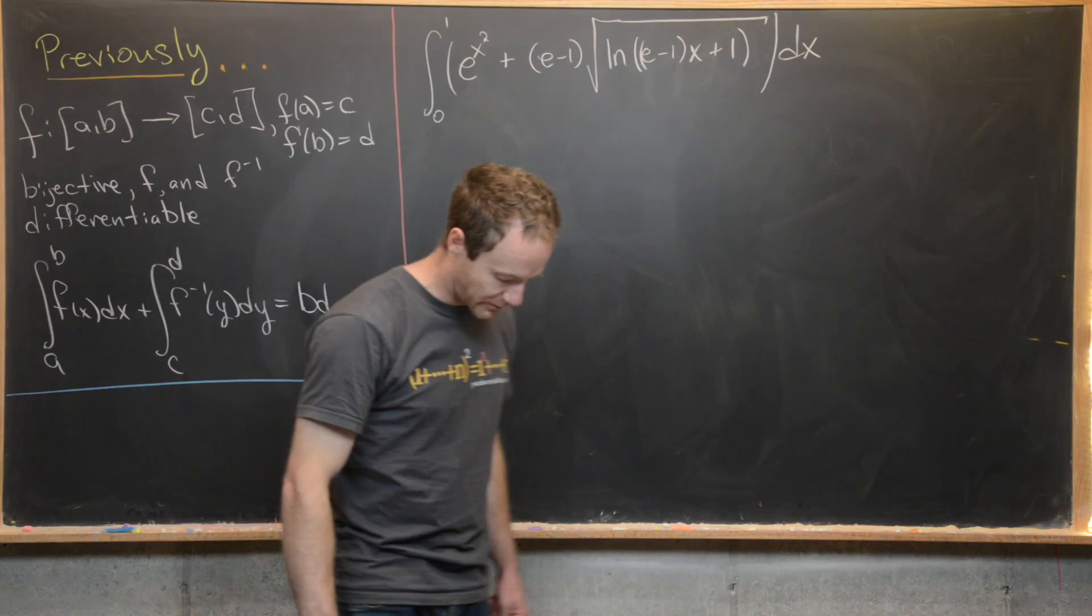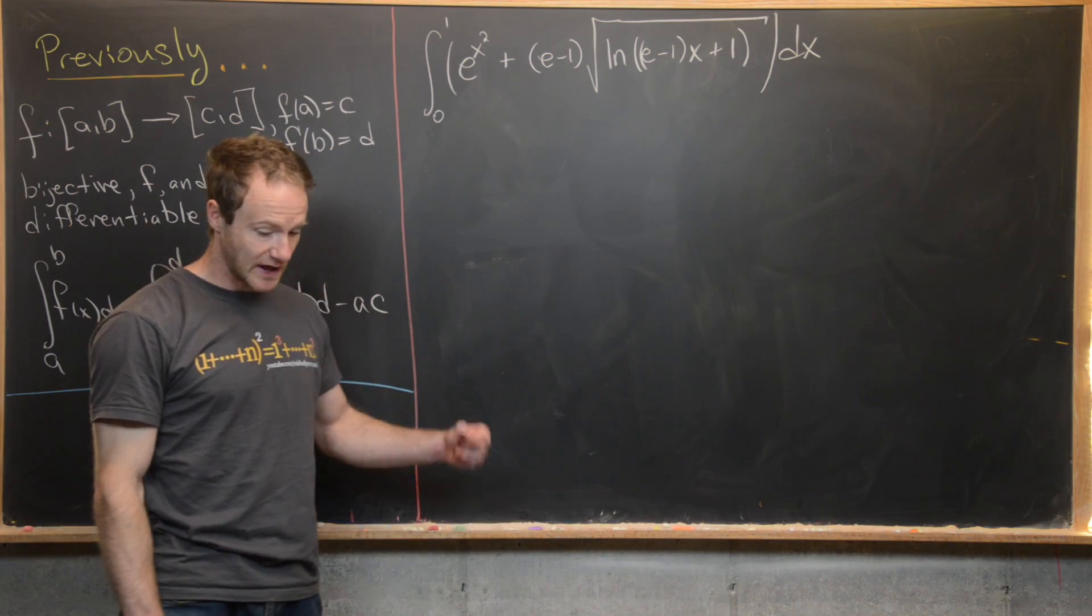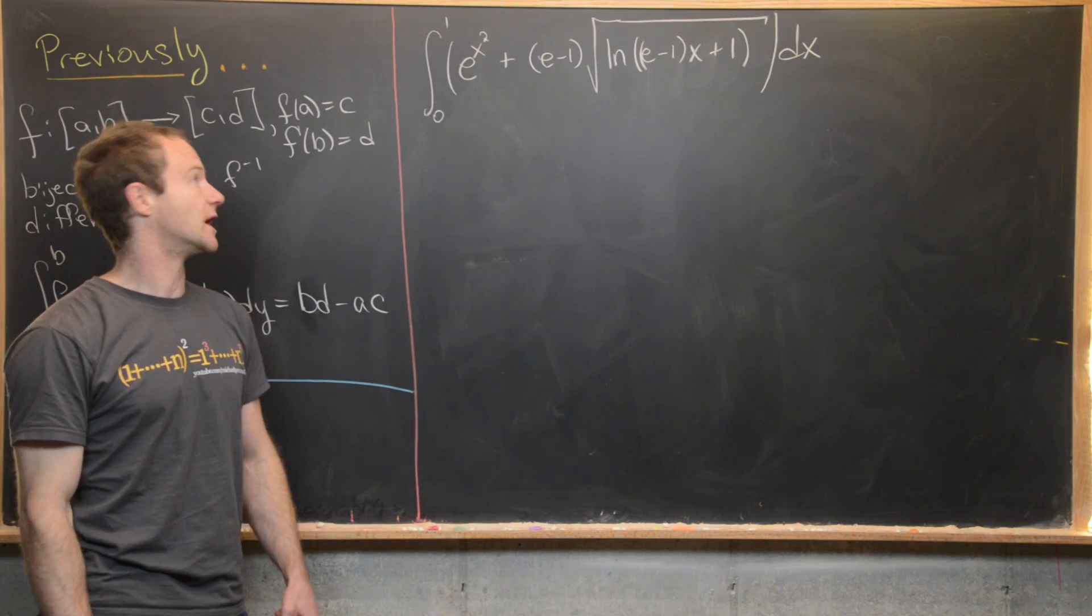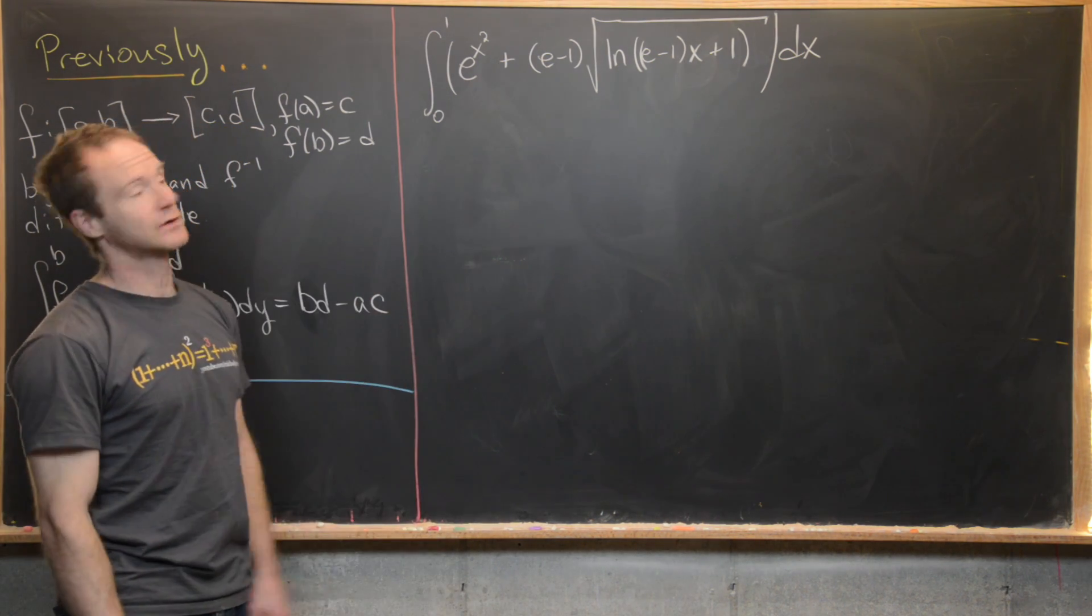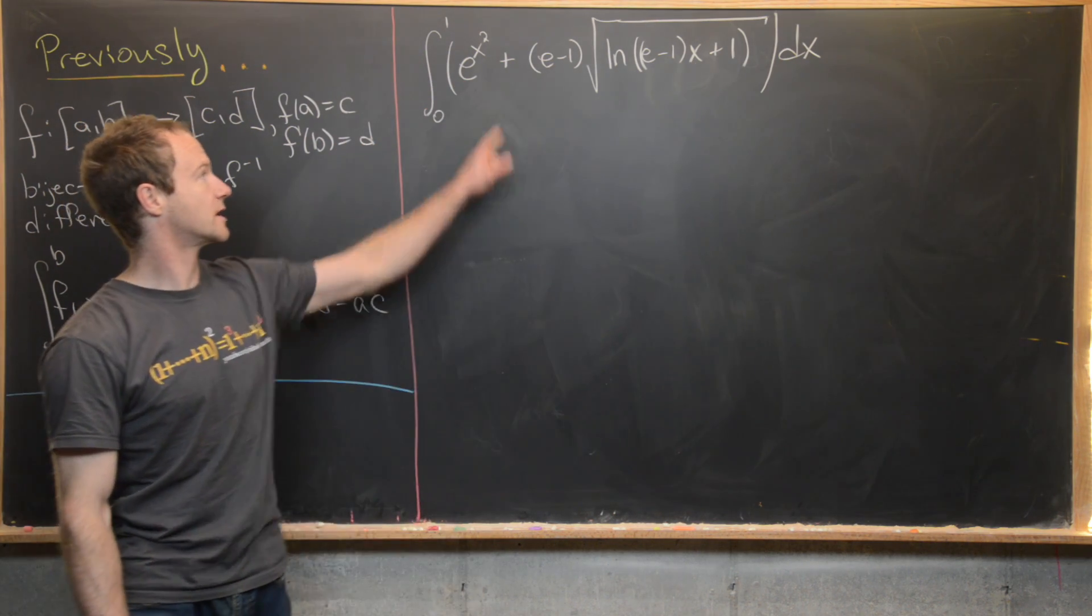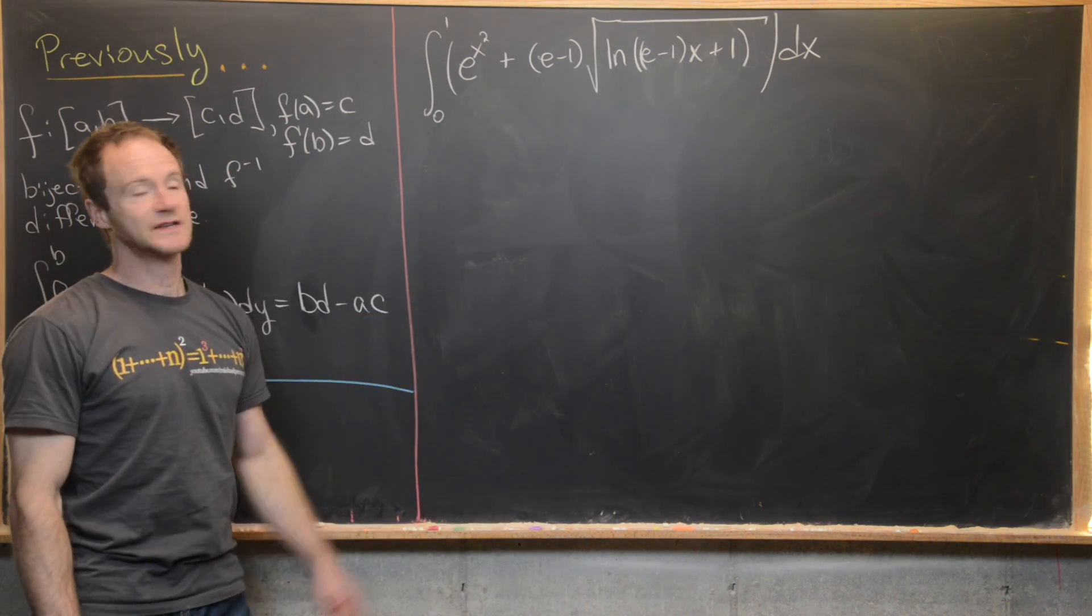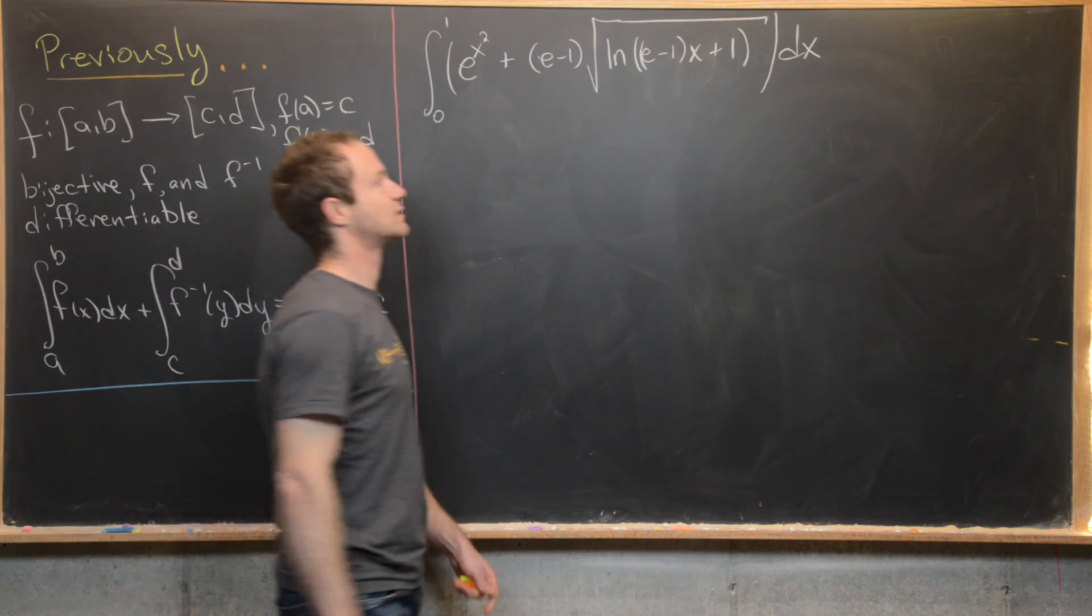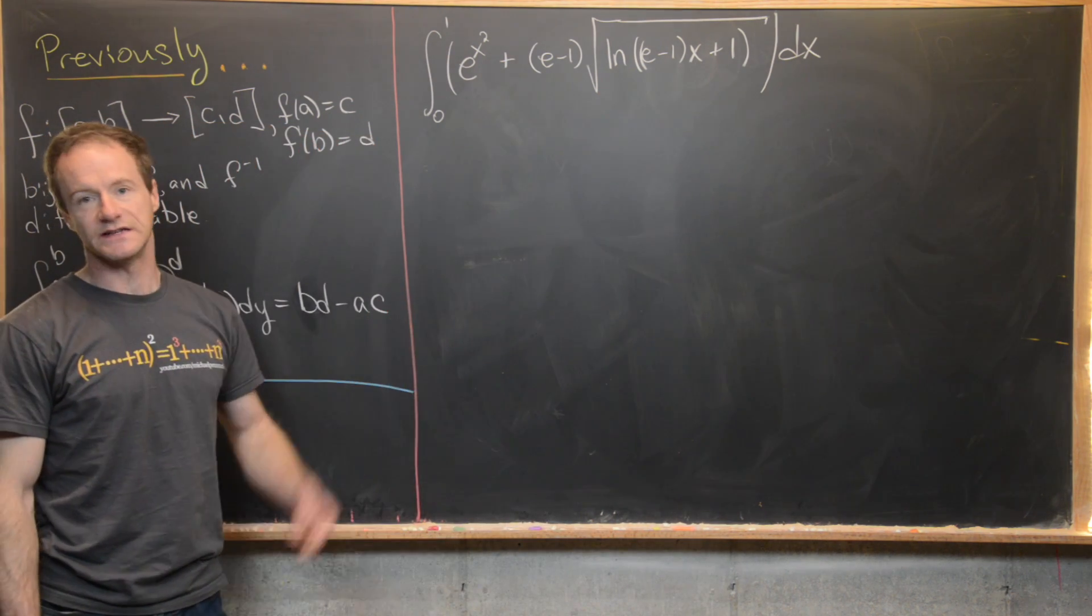So in this video, we want to apply this to an integral which would maybe be very difficult otherwise, and that's this one right here. So we've got the integral from 0 to 1 of e to the x squared plus (e minus 1) times the square root of the natural log of (e minus 1)x plus 1, and then dx.